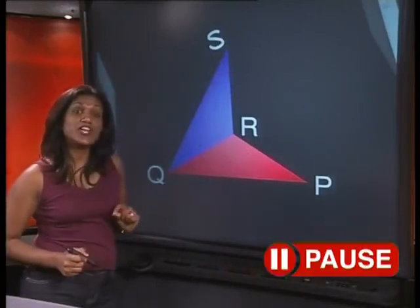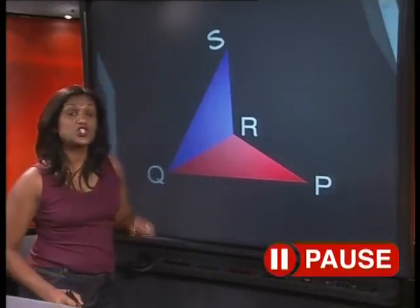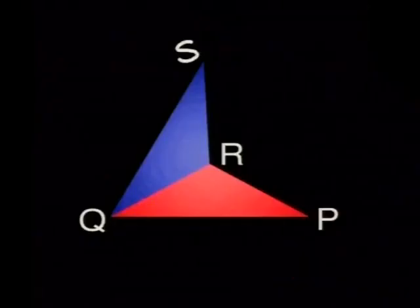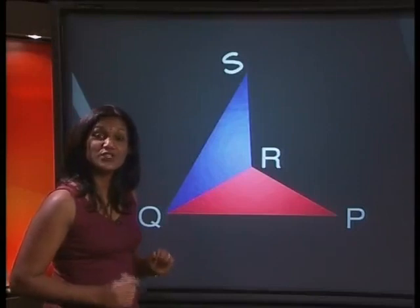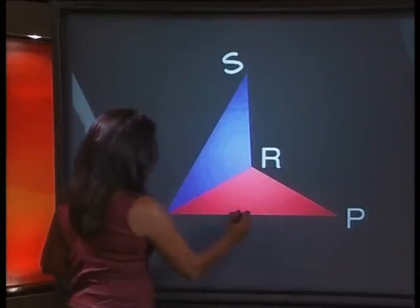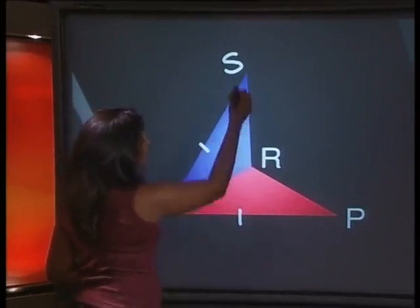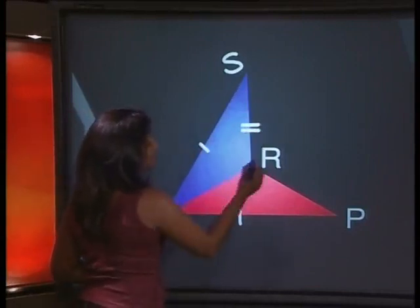Now, let's check that it fits our definition. Do we have two pairs of adjacent equal sides? Yes, we do. Here they are. PQ is equal in length to QS. RS is equal in length to RP.